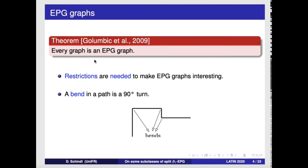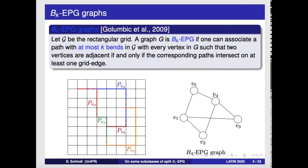It turns out that every graph admits an EPG representation, so we need to make some restrictions to make the problem more interesting. We define a bend as a 90-degree turn in a given path. BK EPG graphs are the class of graphs which admit a representation where each path has at most K bends. Two vertices are adjacent if the corresponding paths share a grid edge.